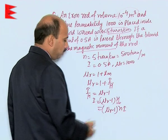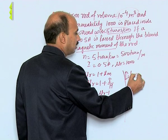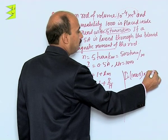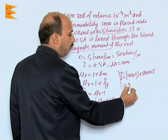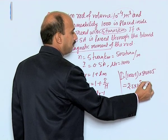Put the value of nI and mu r. So we will be getting here 2.5 into 10 raised to power 5 ampere per meter.